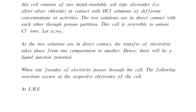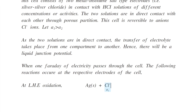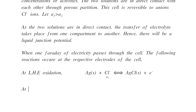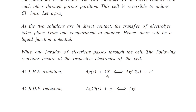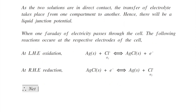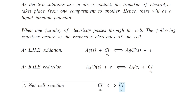At the left-hand electrode, oxidation takes place: silver-silver chloride solid combines with chloride ions of activity A1, producing silver chloride solid, and an electron is liberated. At the right-hand electrode, reduction takes place: silver chloride solid combines with one electron, producing solid silver plus chloride ions of activity A2. The net cell reaction is that chloride ions of activity A1 are converted into chloride ions of activity A2. This is equation number 1.